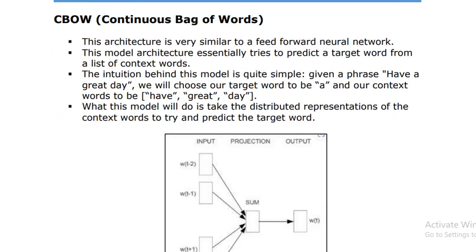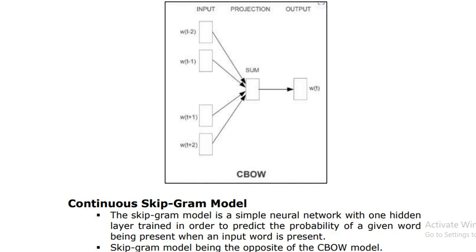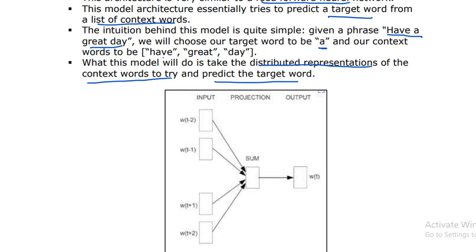The first one is Continuous Bag of Words. This architecture is very similar to a feed-forward neural network. This model essentially tries to predict the target word from a list of context words. The intuition is quite simple — given a phrase like 'have a great day', we choose our target word to be 'a' and our context words are 'have', 'great', and 'day'. The model takes the distributed representation of context words to predict the target word.